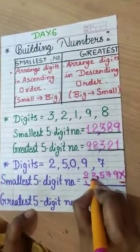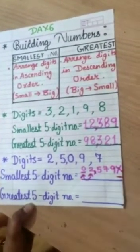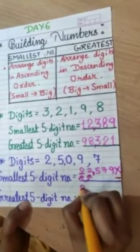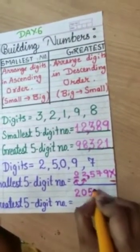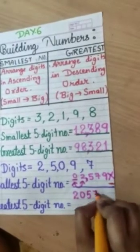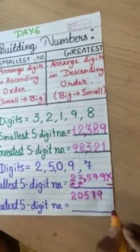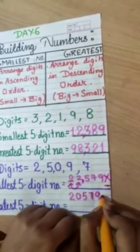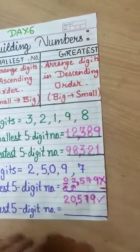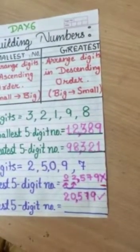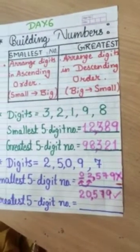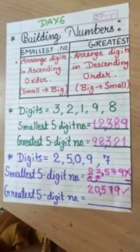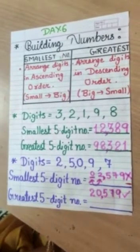0 and 2, first and second place digit will be reversed. Like, 2 will come at the first place, then 0, then 5, 7, 9. It is the correct answer now. So, when 0 is coming with the digits, we need to exchange the first and second digit to build the correct number and 5 digit number.